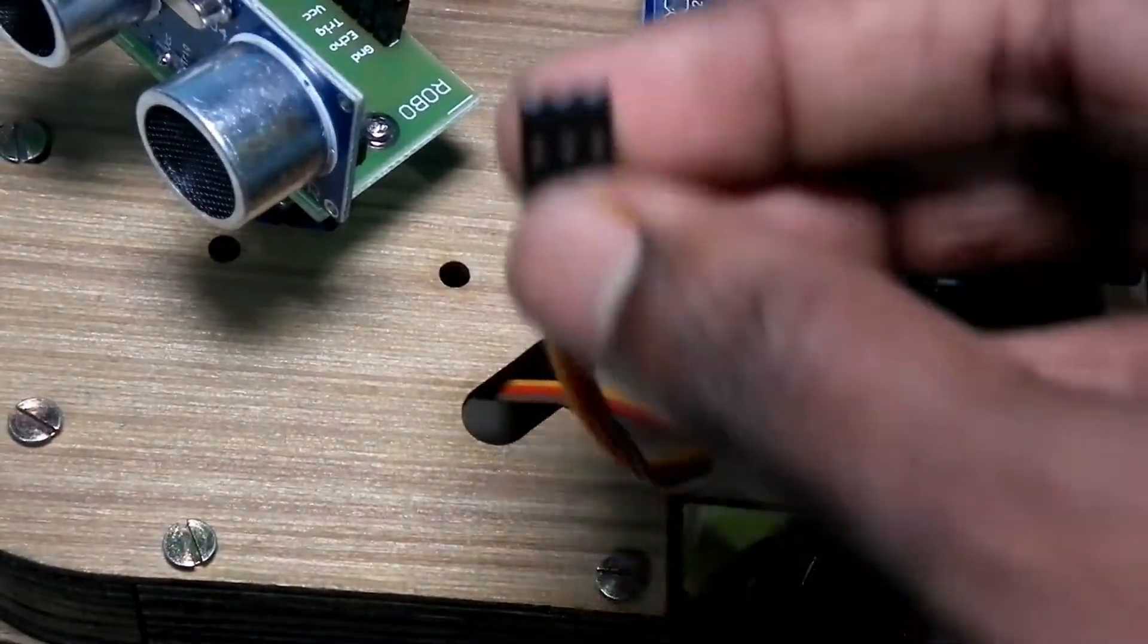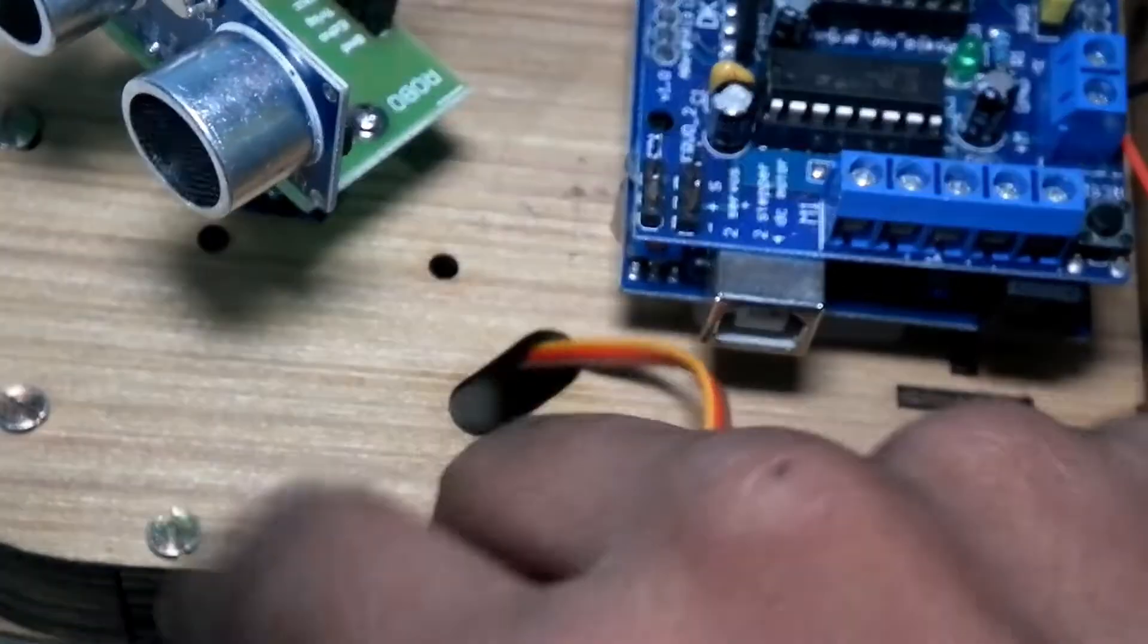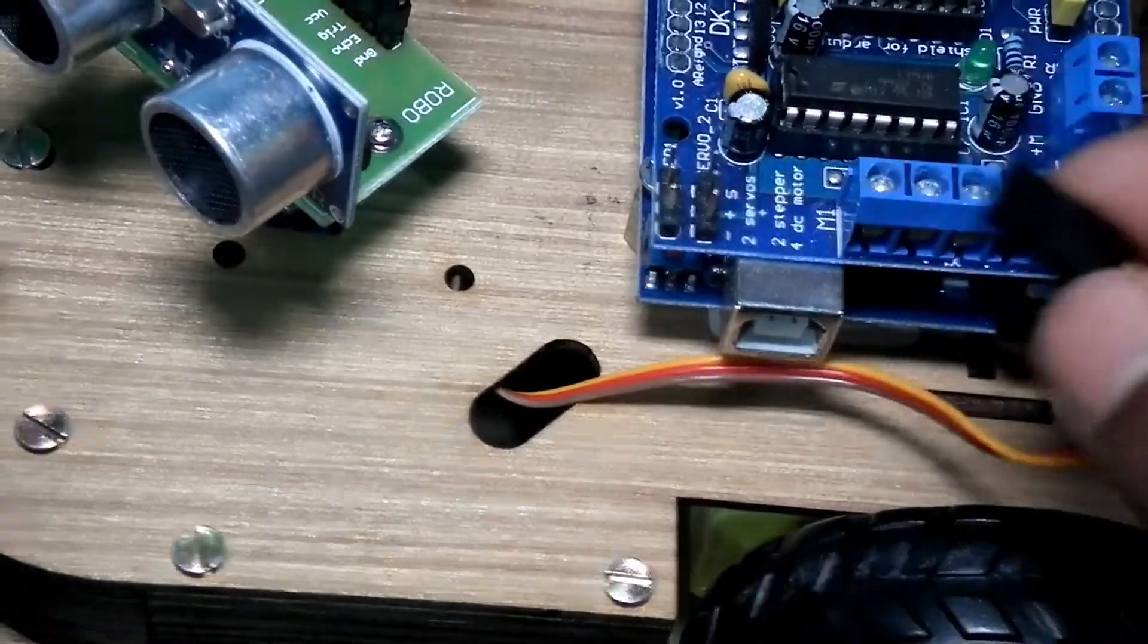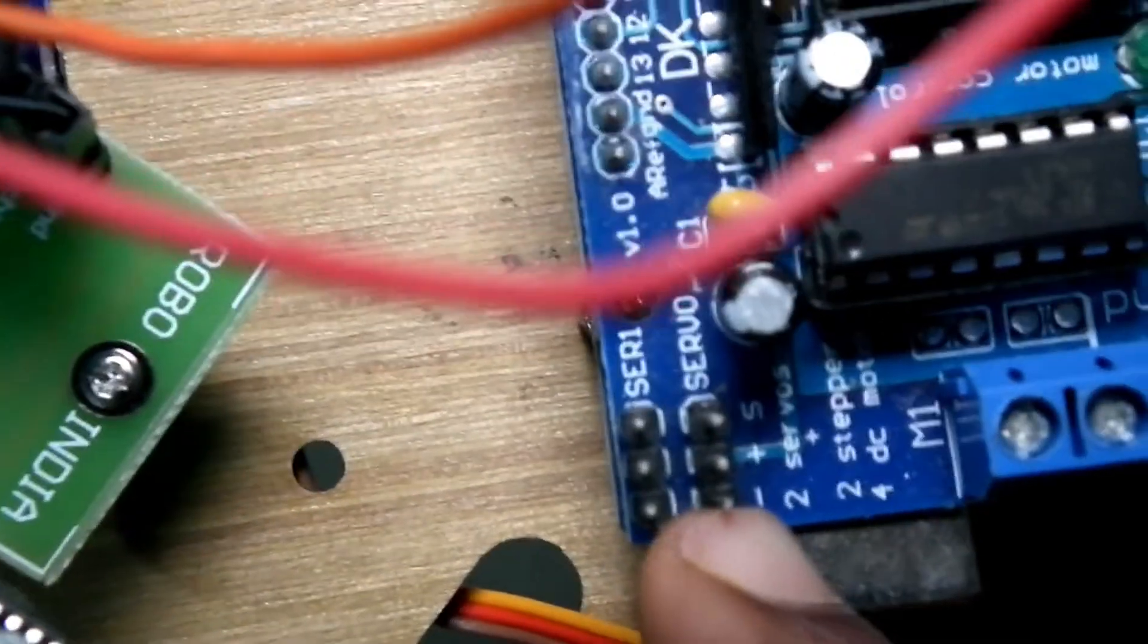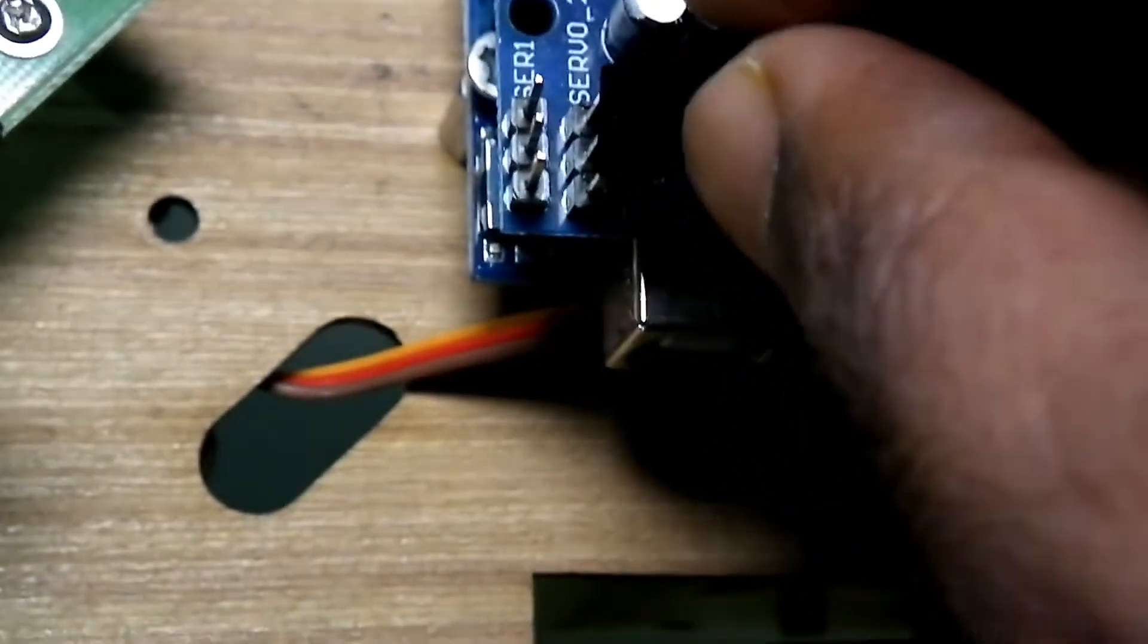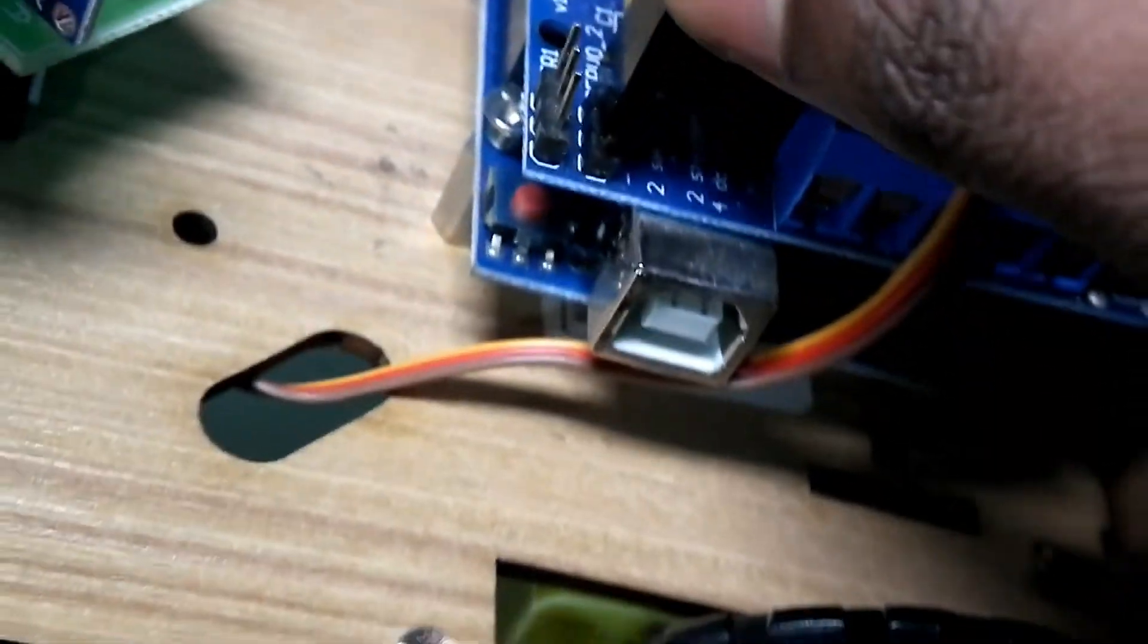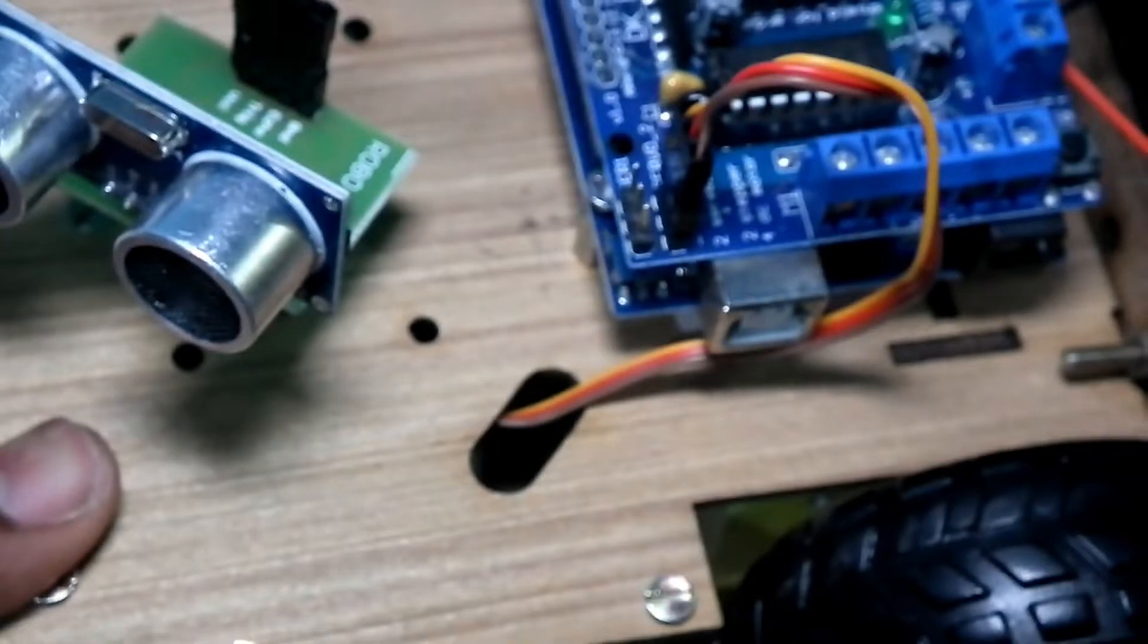Now we have to do the wiring left for the servo motor. You can see there are three pins over here, and there is one over here which is written as servo. So we will insert it in there. So the servo pins are also now inserted.